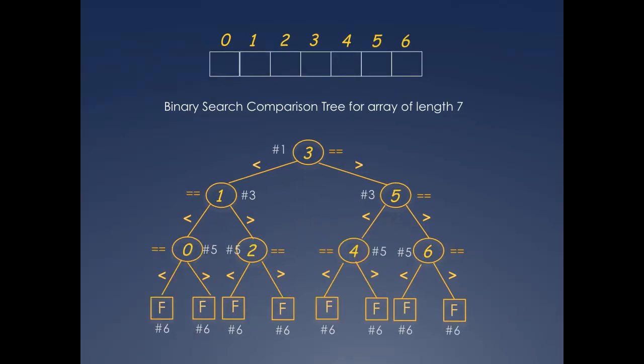Here's another example, the comparison tree for an array of length 7. The number of comparisons are marked next to the nodes as before. This time, all failure nodes, 8 in number, are at the same level. Observe again that the number of failure nodes is 1 more than the length of the array.